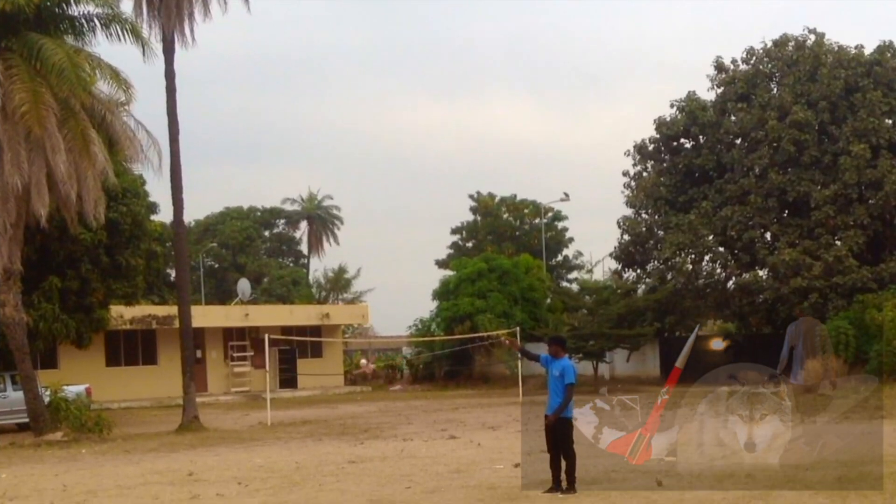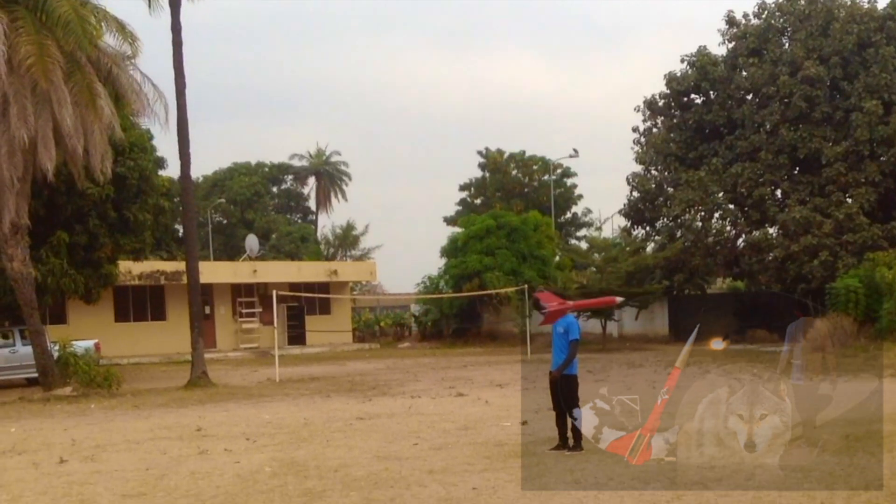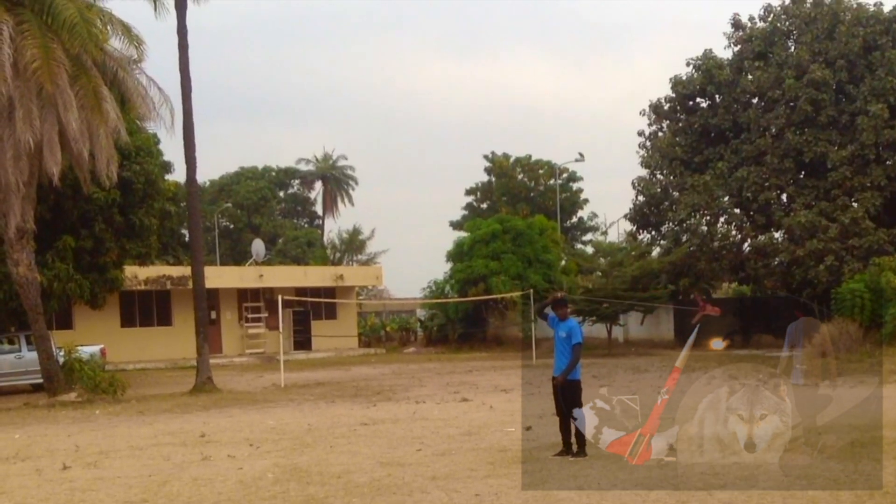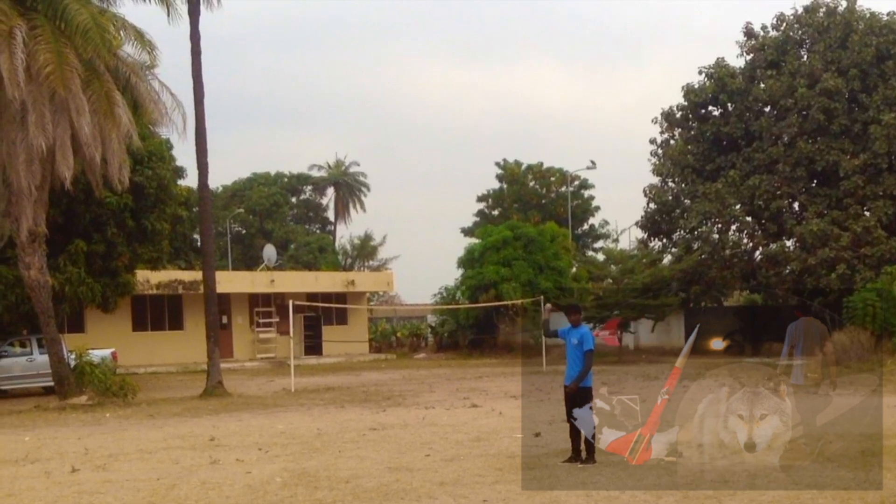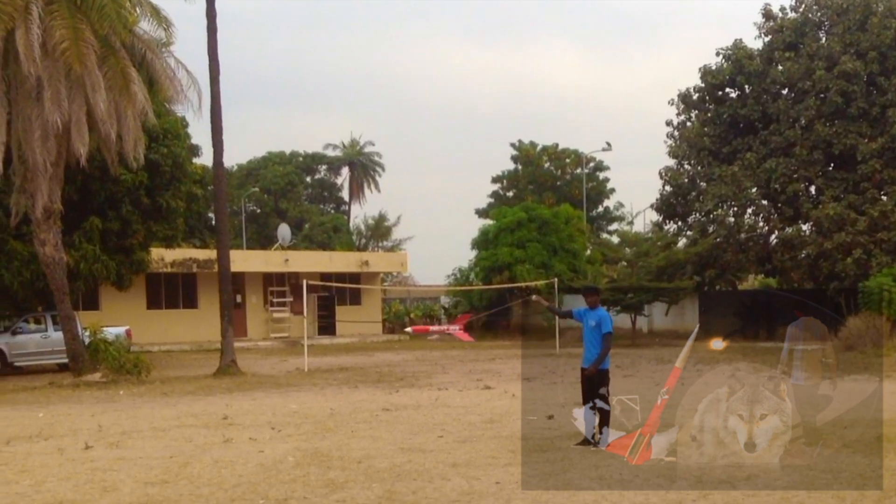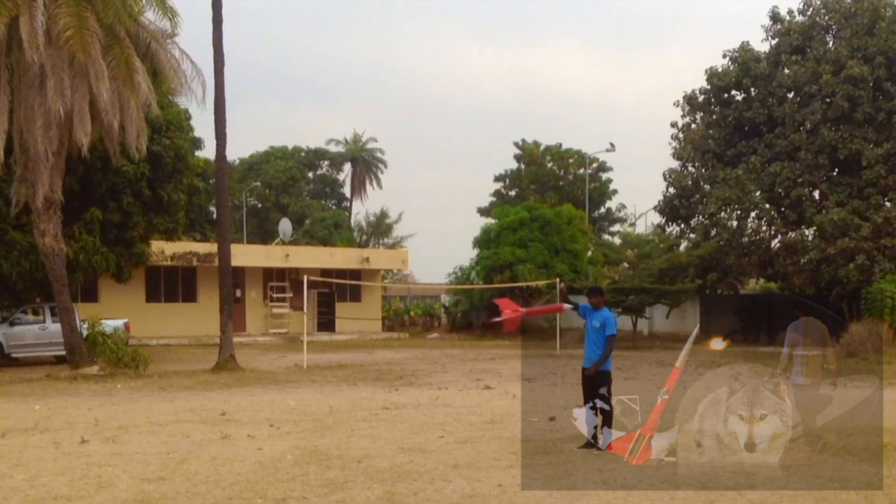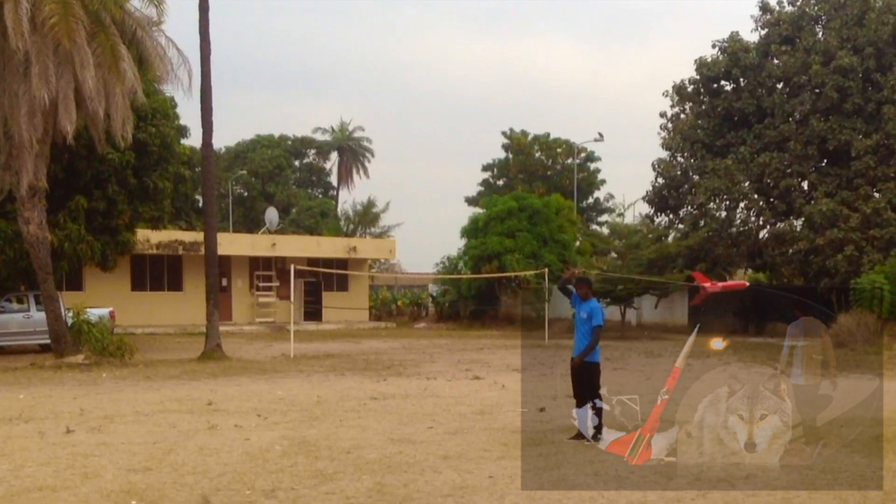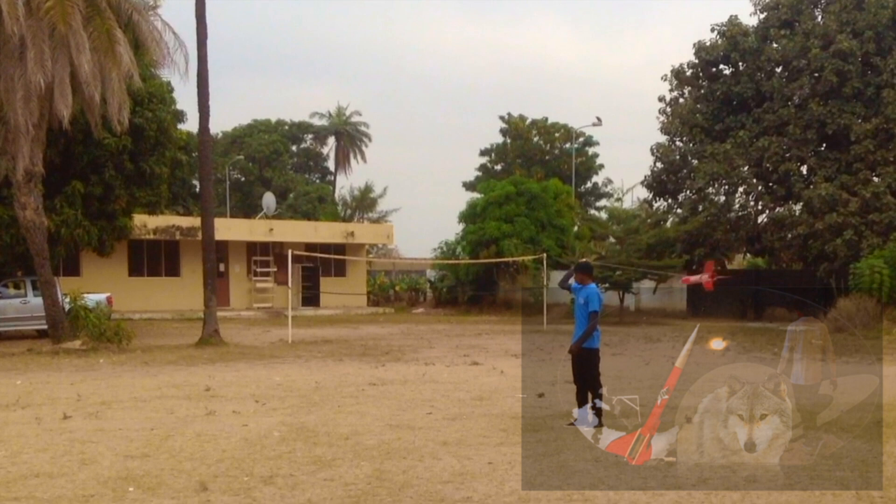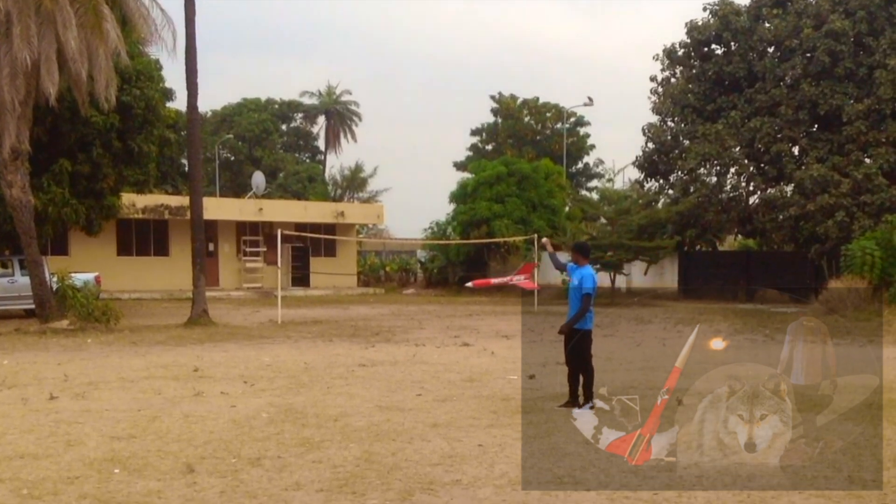Now here is another conservative method of determining stability using center of gravity called the swing test. After obtaining its balance point on a knife edge, I tie a rope at the balance point itself. As you could see, the nose keeps pointing forward as I swing it around me, a positive indication of stability.